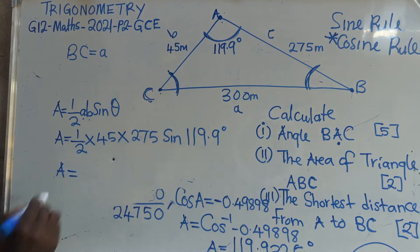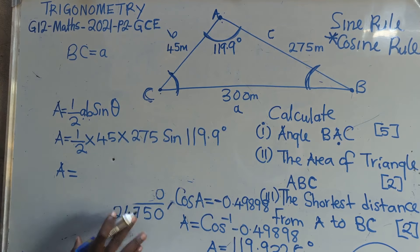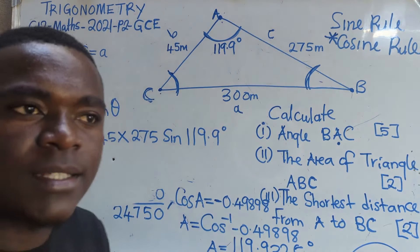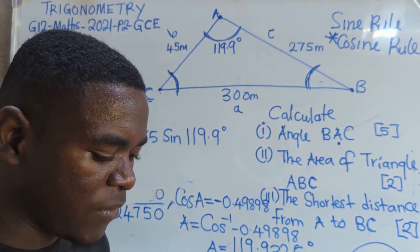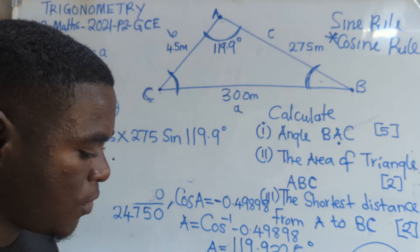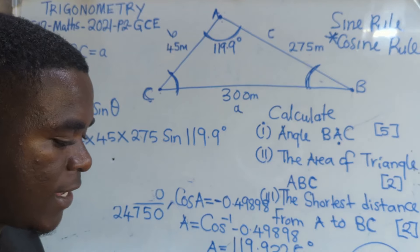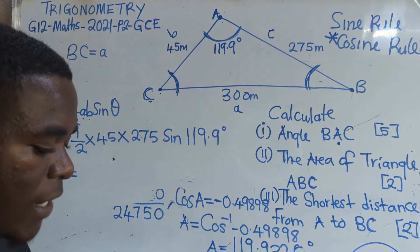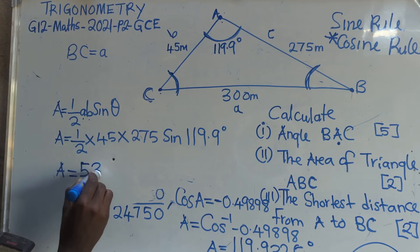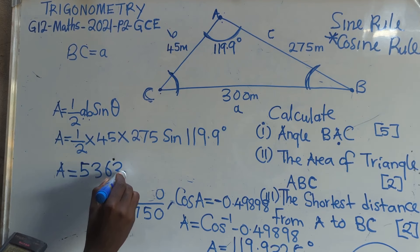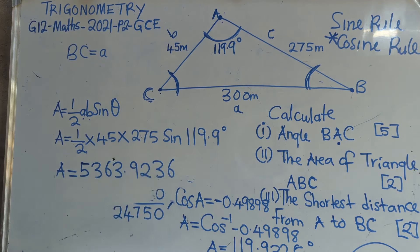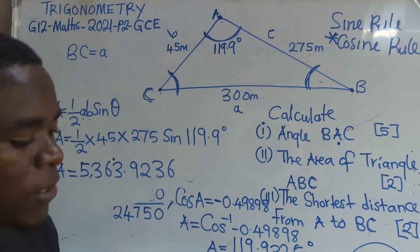This is now equal to — what answer are you going to get? So: 0.5 times 45 times 275, then sine 119.9. The answer that I'm getting is 5363.923 — it is just going. So there is a comma on your calculator — you are able to see a comma.